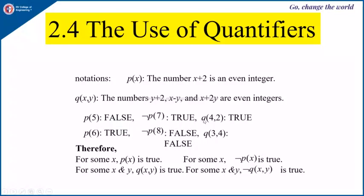Suppose x is 4 and y is 2 and you substitute in q(x, y): y plus 2 is 2 plus 2 which is 4, x minus y is 4 minus 2 which is 2, and x plus 2y is 4 plus 4 which is 8 — all are even integers. So q(4, 2) is true. Likewise, p(6) is true, negation of p(8) is false, and q(3, 4) is false.